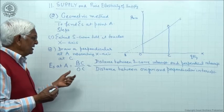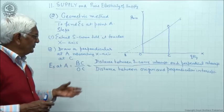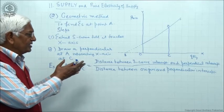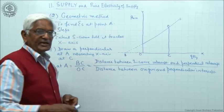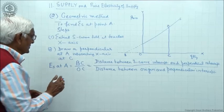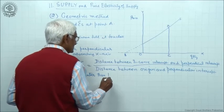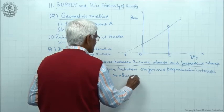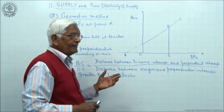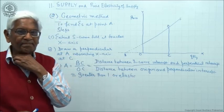Now, what can you say about the numerical value of elasticity? If you know how much BC is and how much OC is, you can find out. Suppose BC equals 10 and OC equals 5, then 10 upon 5 becomes 2. One thing is clear: it is greater than 1, or you simply say elastic. So any supply curve intersecting through or starting from the y-axis has elasticity greater than 1.